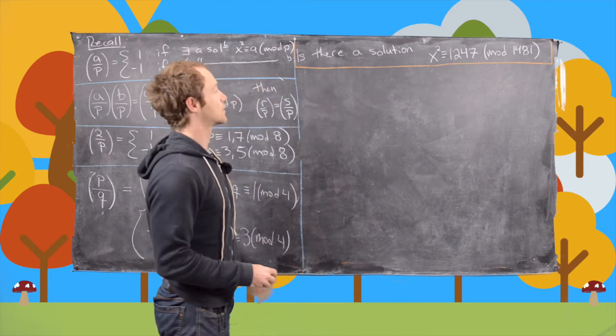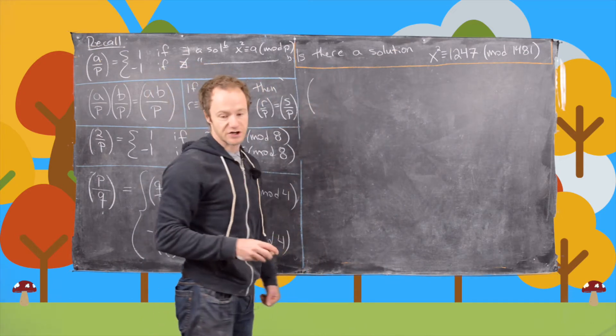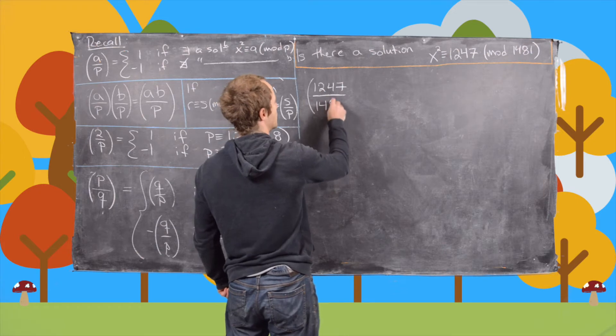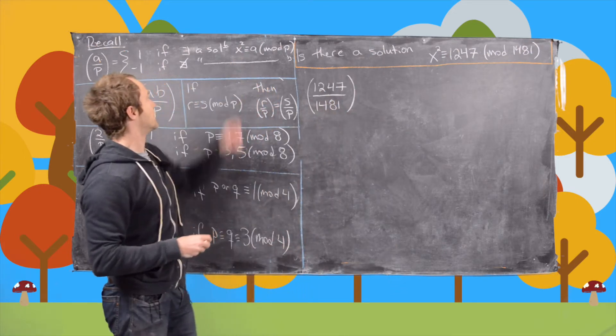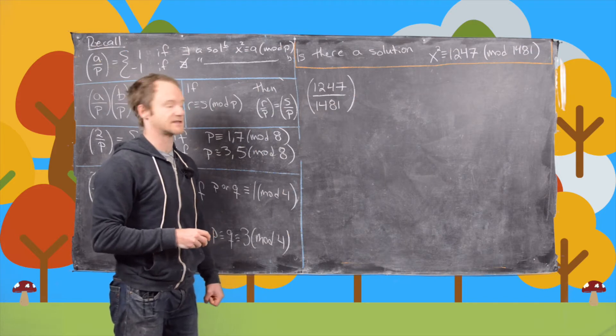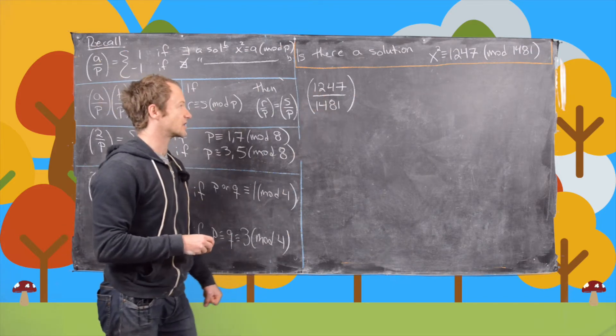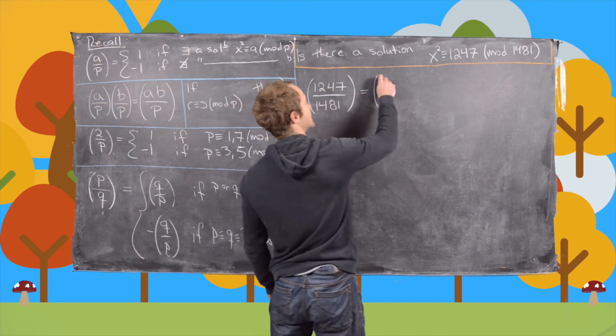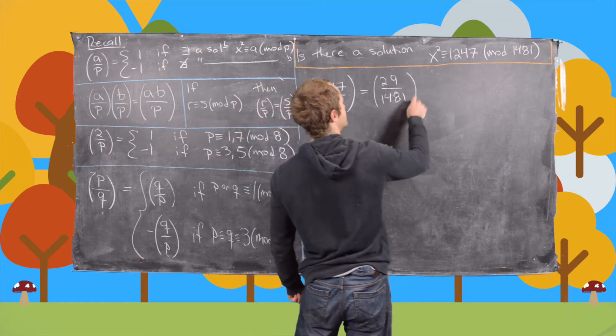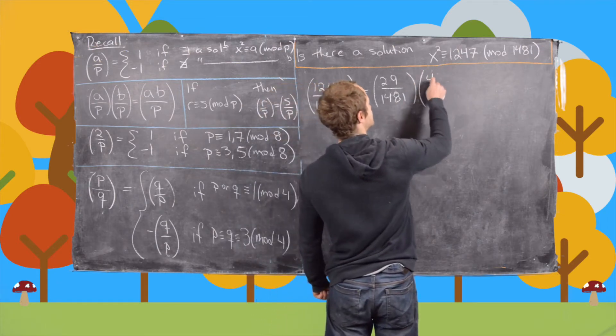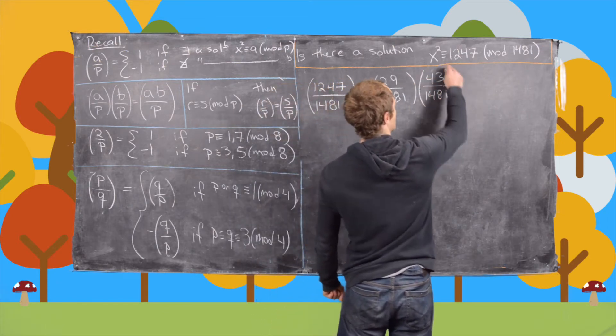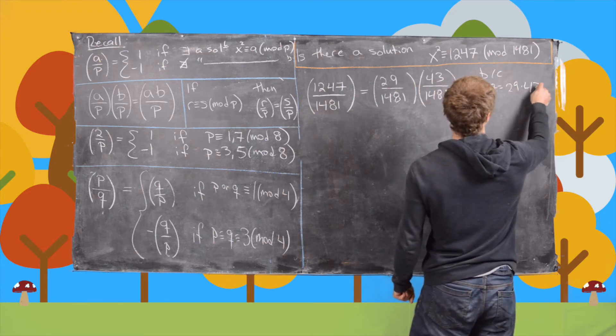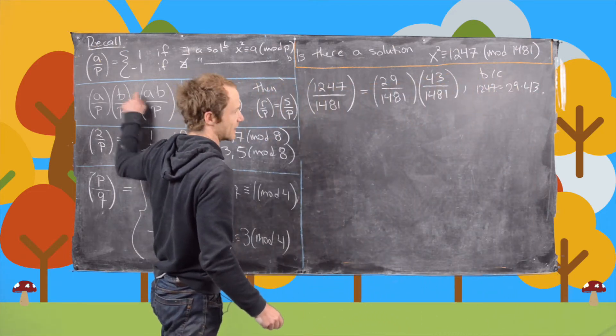So answering this question is equivalent to determining the value of this Legendre symbol, 1247 over 1481. So if it's plus one, then there is a solution. If it's minus one, then there is not a solution. So the first thing that we'll notice is that you can factor 1247 into 29 times 43. And so that means we can write this as 29 by 1481, and then 43 by 1481. And so this is because 1247 is 29 times 43. And we're using this property right here.